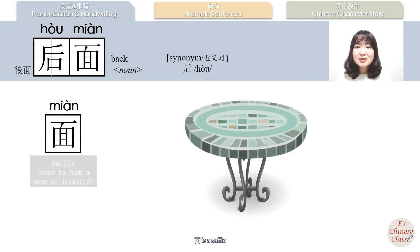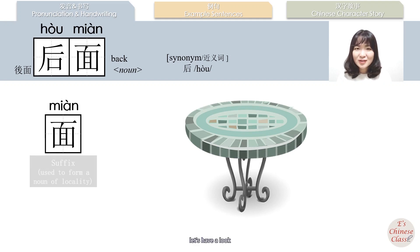面 is a suffix. It makes a lot of nouns of locality. Let's have a look.